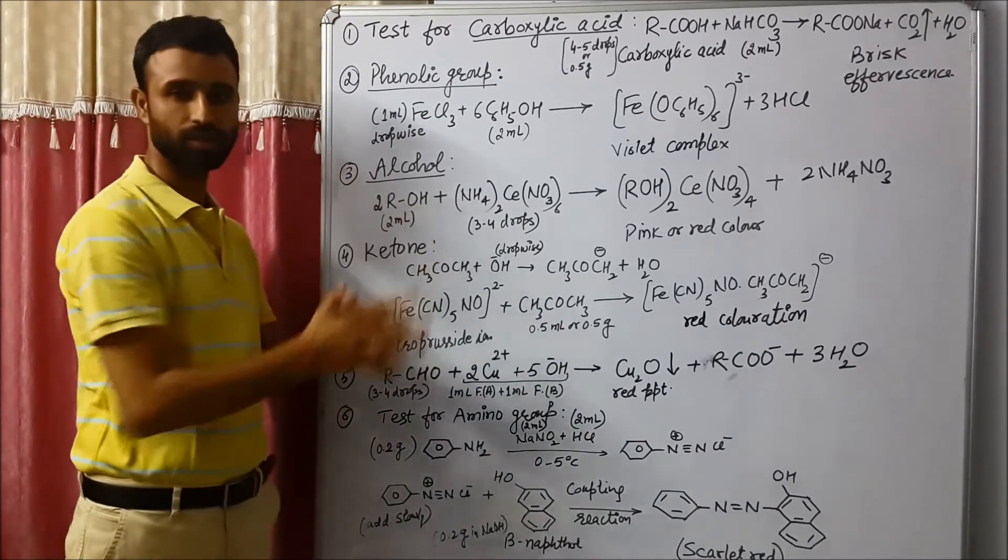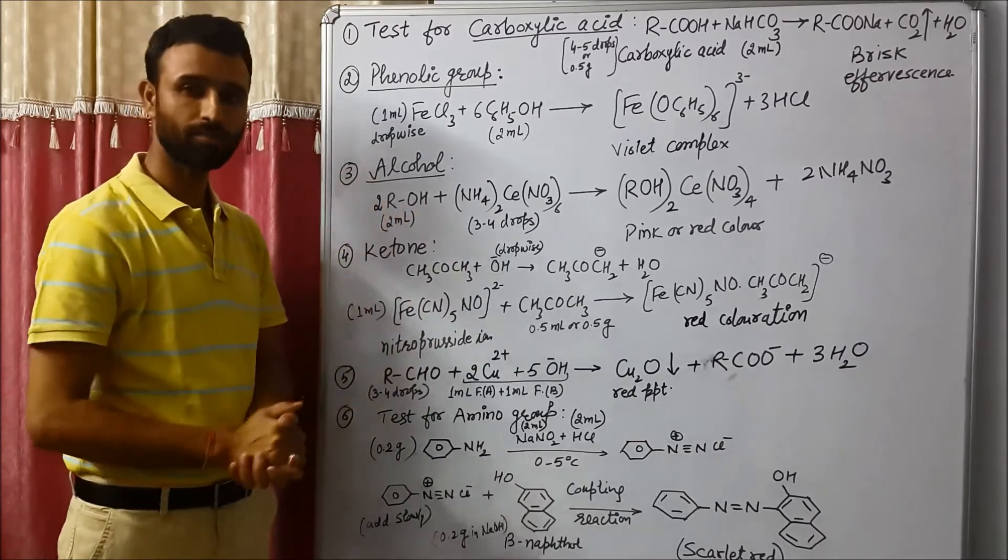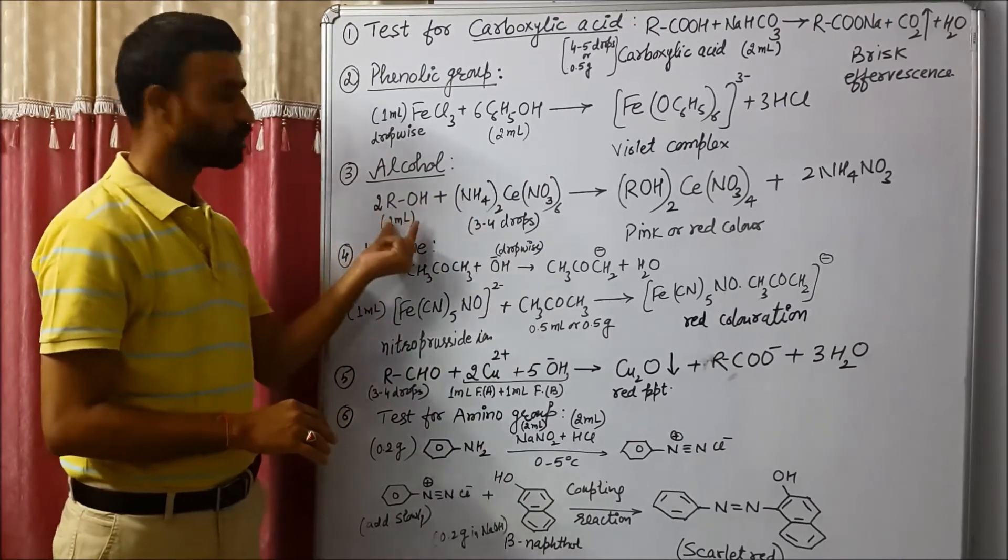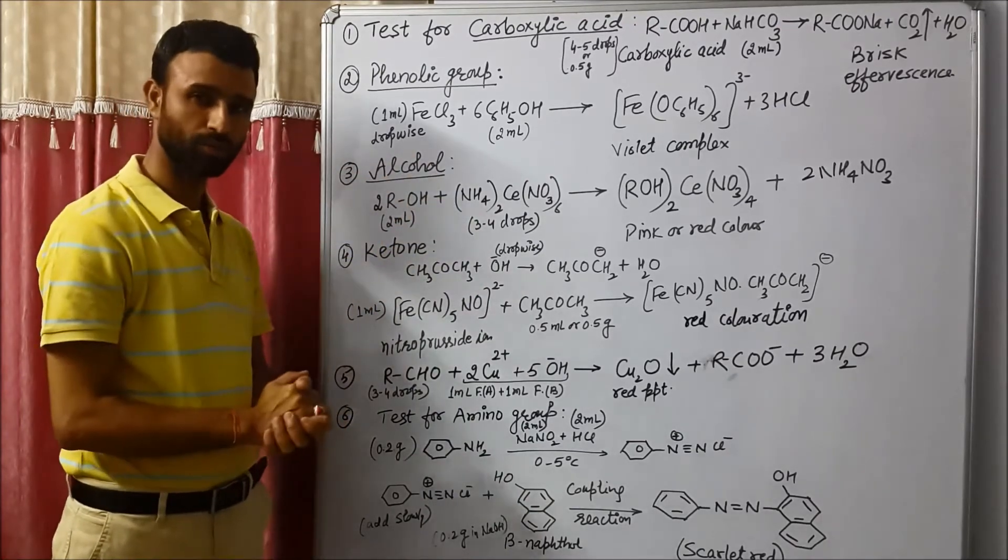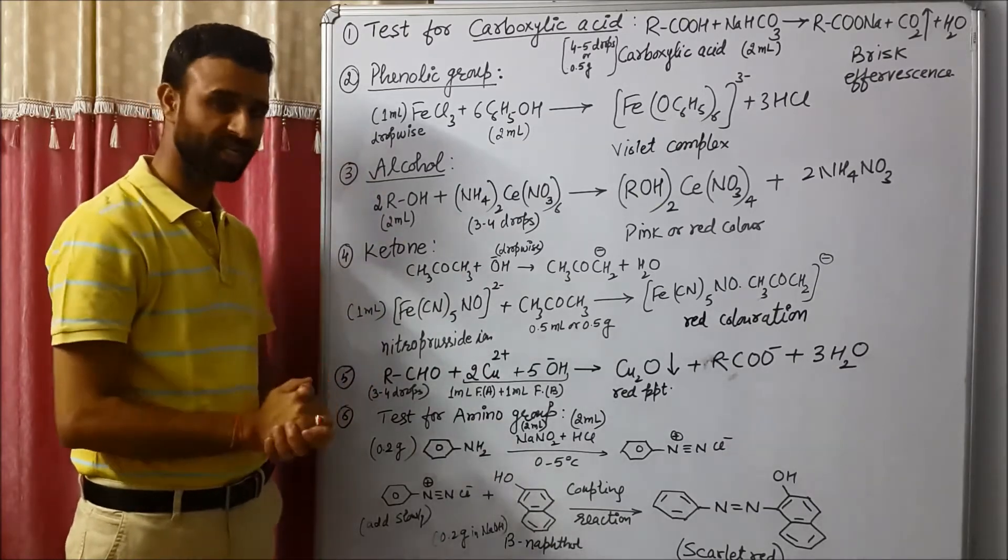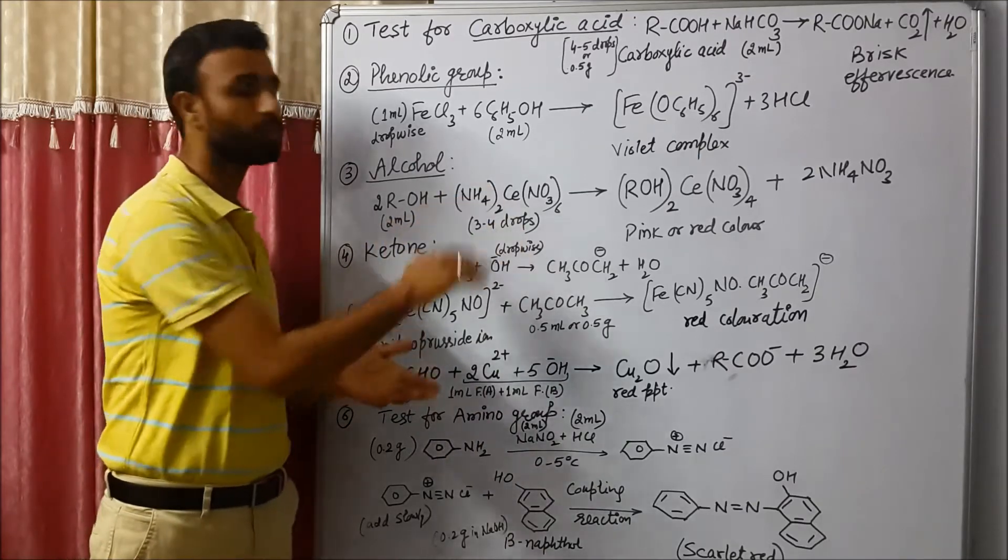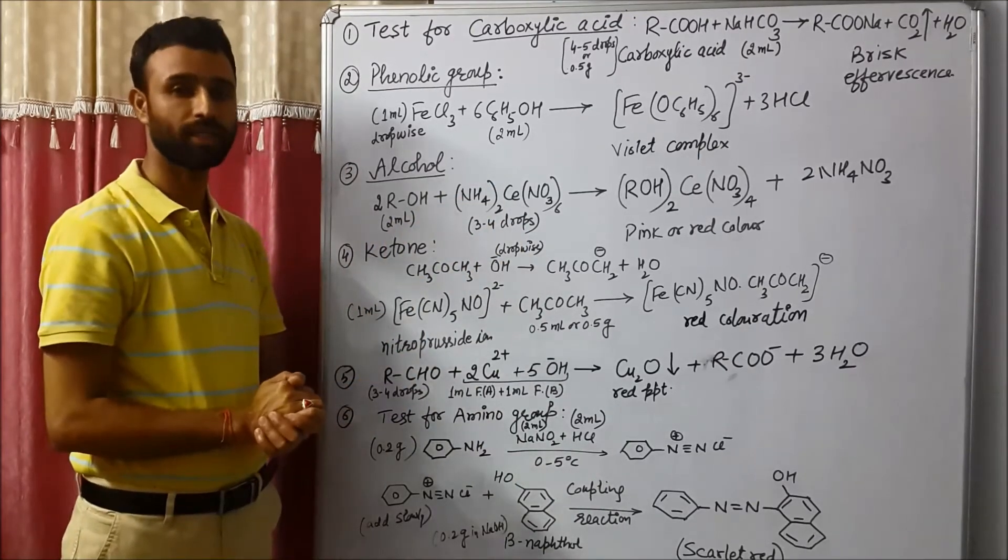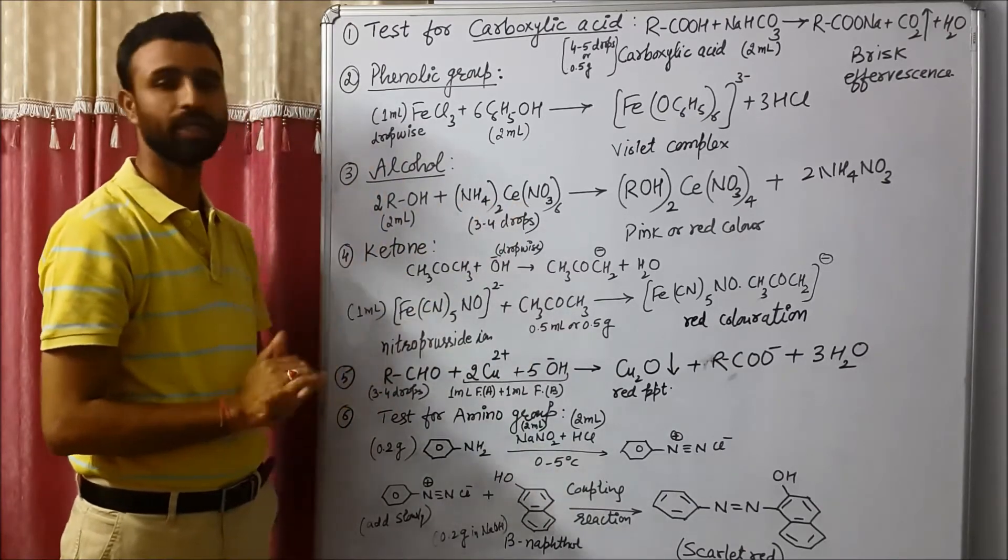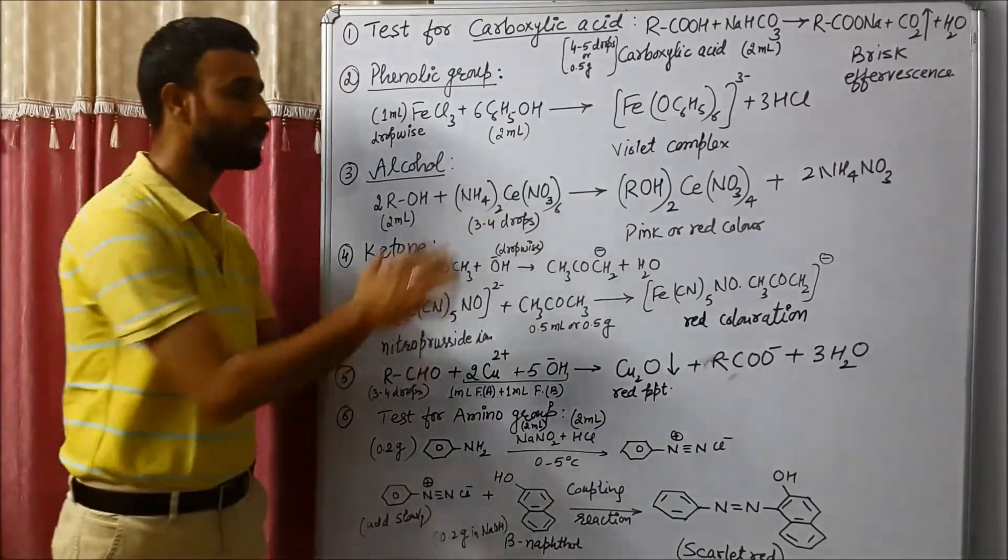Then come to the next, that is alcoholic group. Now take organic compound. We have this organic compound. Let us take alcohol compound is there. So 2 ml take in dry test tube. Add 3 to 4 drops of ceric ammonium nitrate. As we add 3 to 4 drops of ceric ammonium nitrate, we see pink or red color complex. If it is formed, that means alcohol is present.